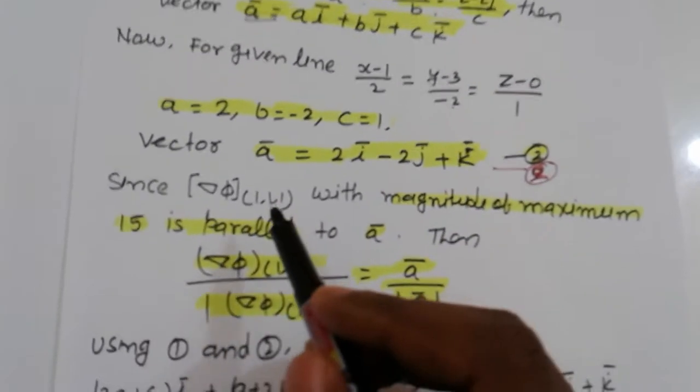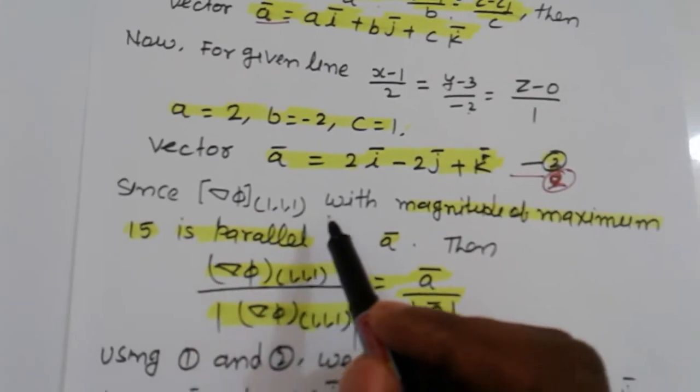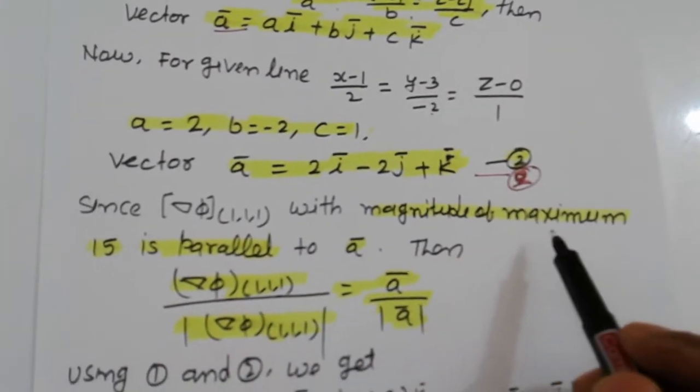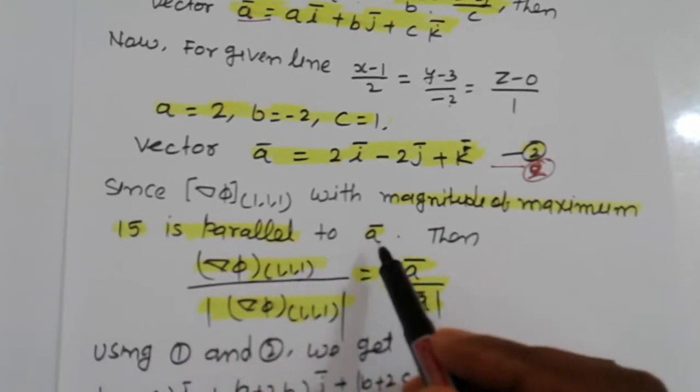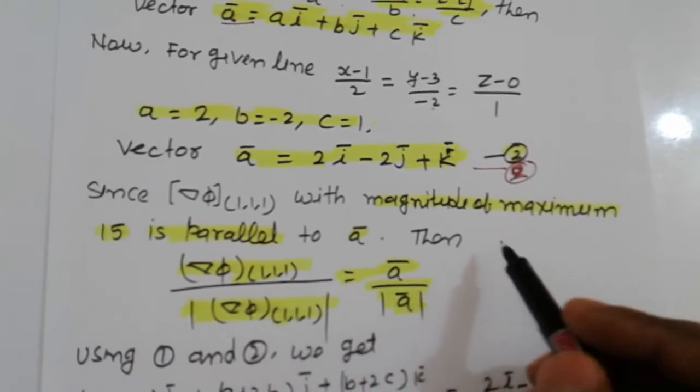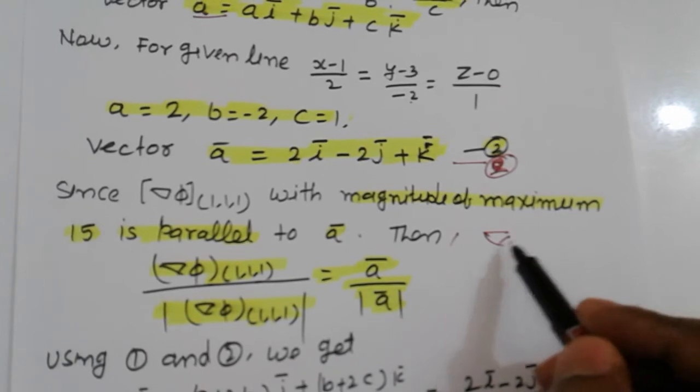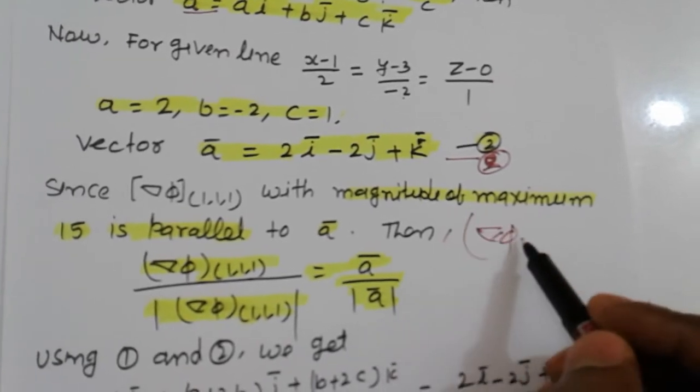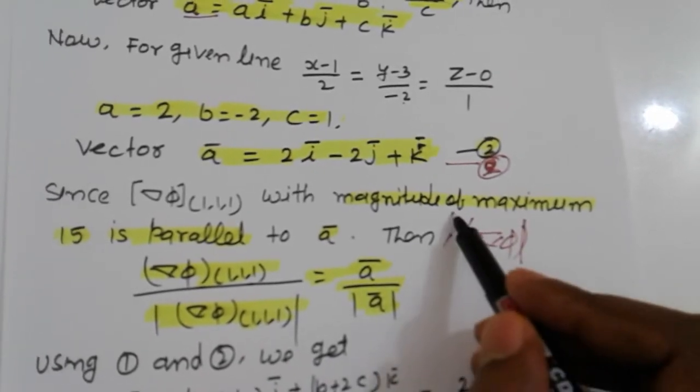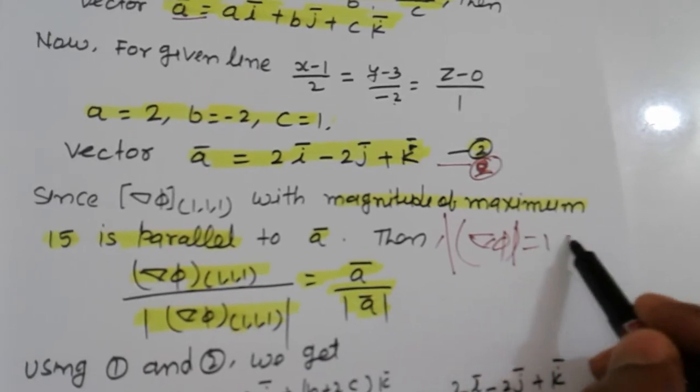Since nabla phi at point (1,1,1) with magnitude of maximum 15 is parallel to vector a, then: